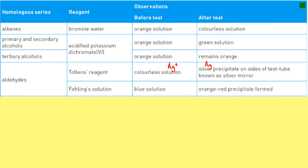Fehlings or Benedict's is a similar test in that you start off with a blue solution, because you've got copper 2+ ions in a complex. Those copper 2+ ions change to copper 1+ ions, and in that transition they go from blue to orange or brick red. That's a precipitate that shows it has reacted. So aldehydes do react; ketones do not react.